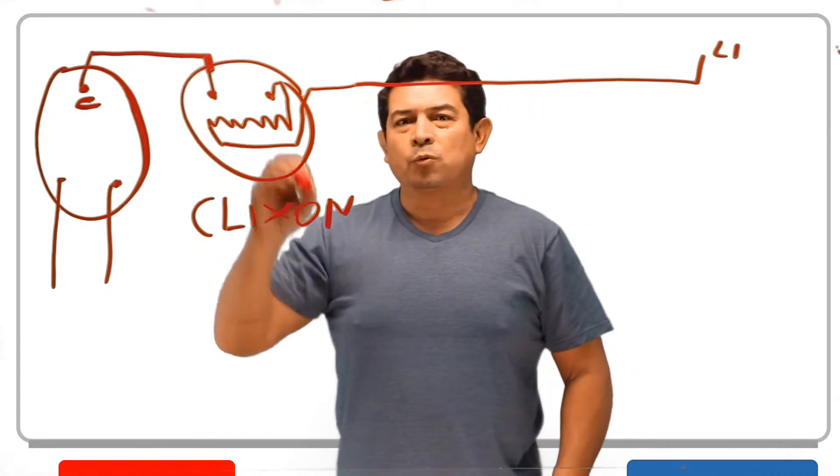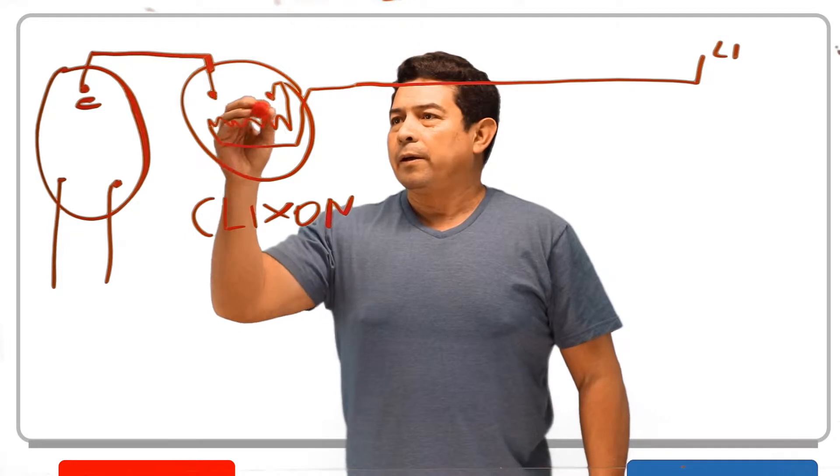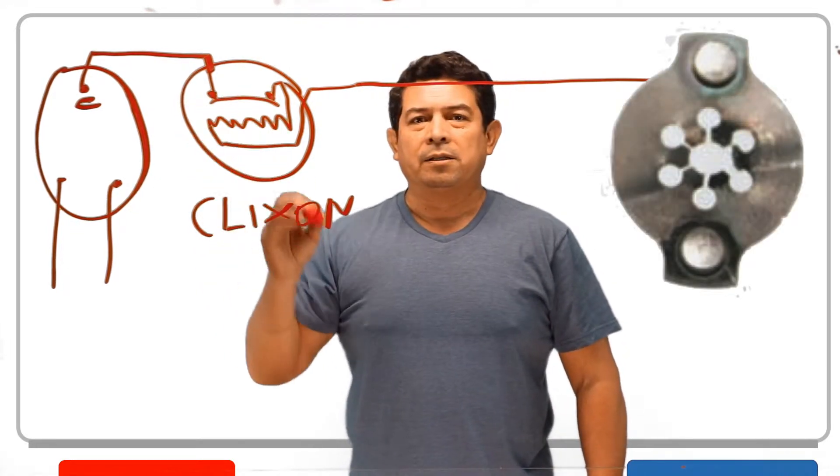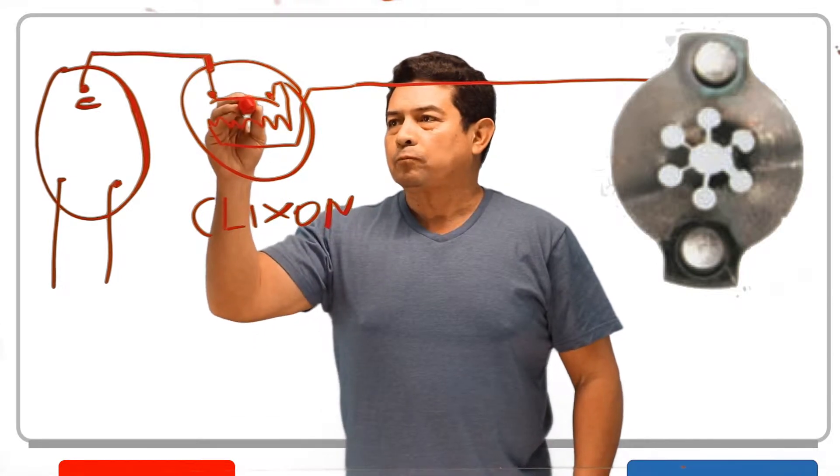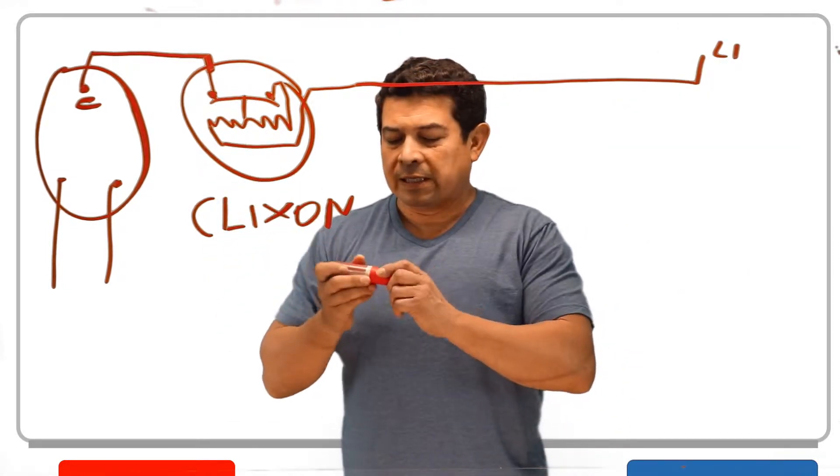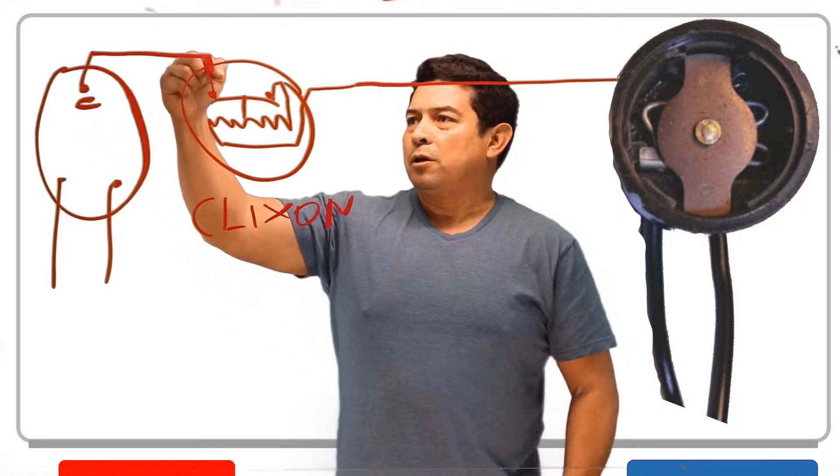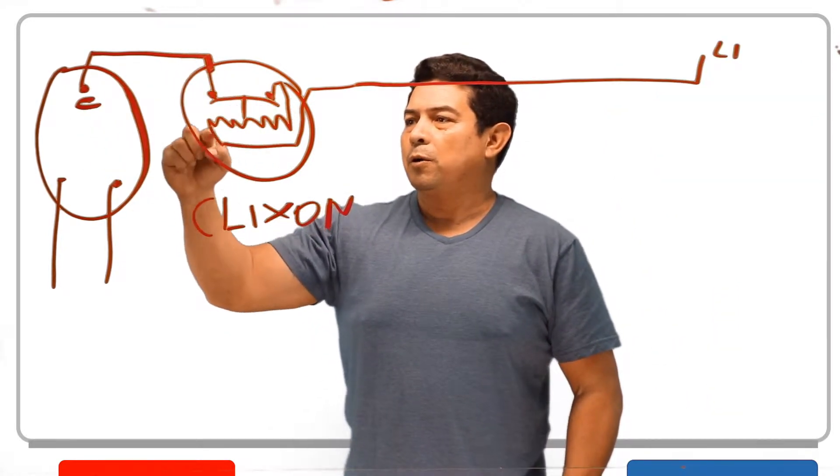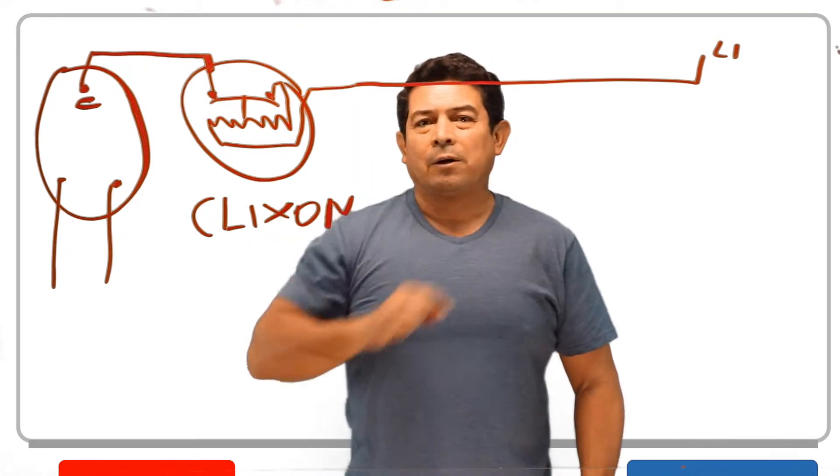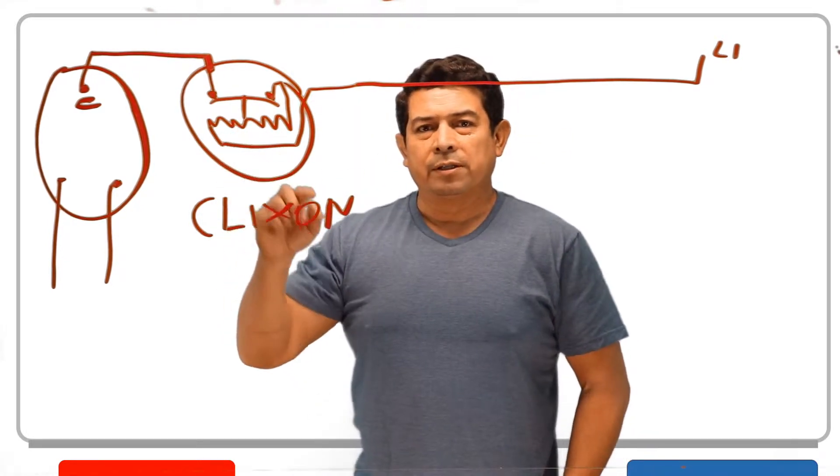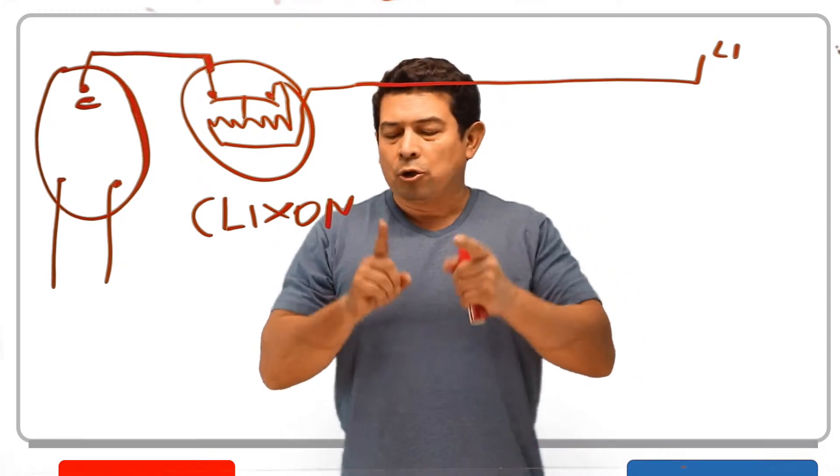But let's talk about this one because this is where the Clixxon would be. Now on here, there is a bimetallic disc like this. All of this is inside of that little black piece and what happens is as the amperage goes through here, it goes through that little heater and then back on out. What happens there is as the amperage increases, anytime amperage increases, two things change.